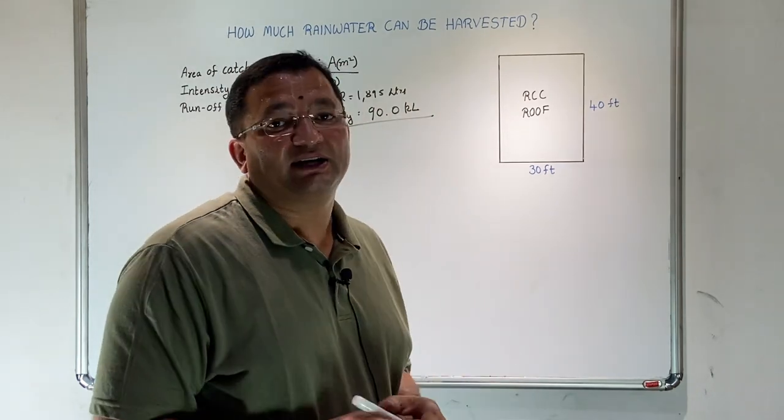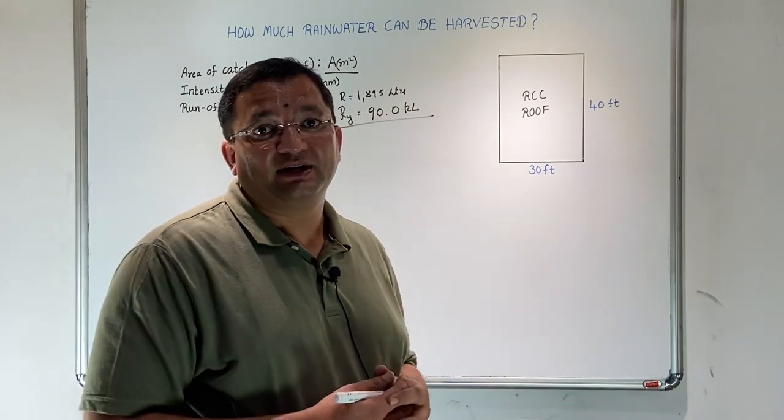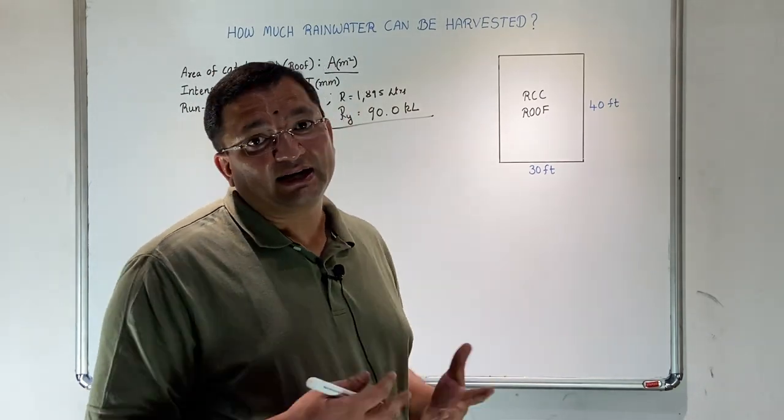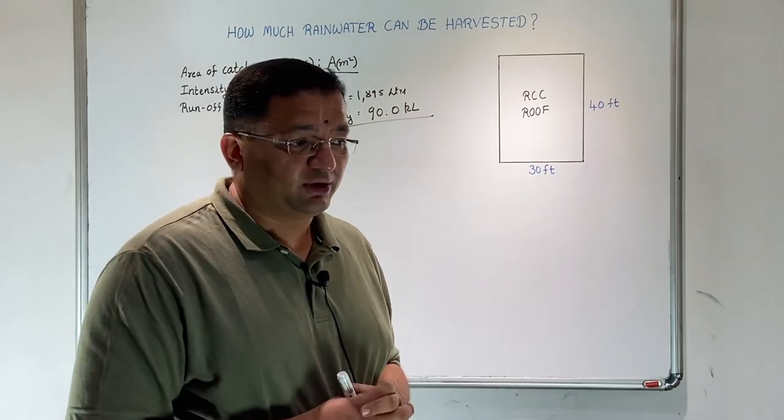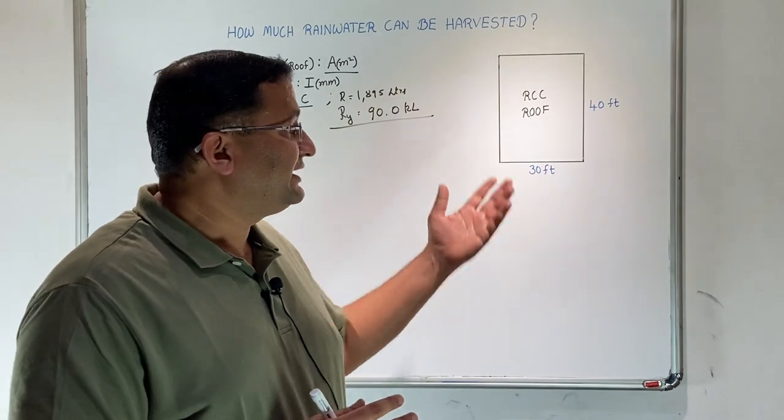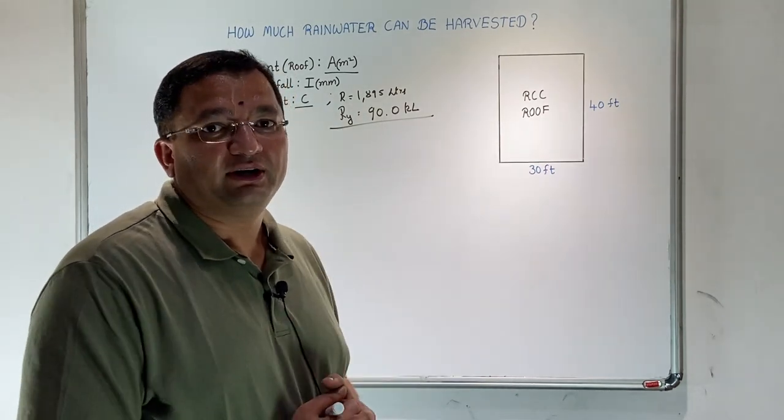For example, for glass one can take 0.9, for soil 0.3, for asphalted surface 0.65. One can refer to literature available on the web for standard coefficient numbers, but I suggest you go by your ingenuity.